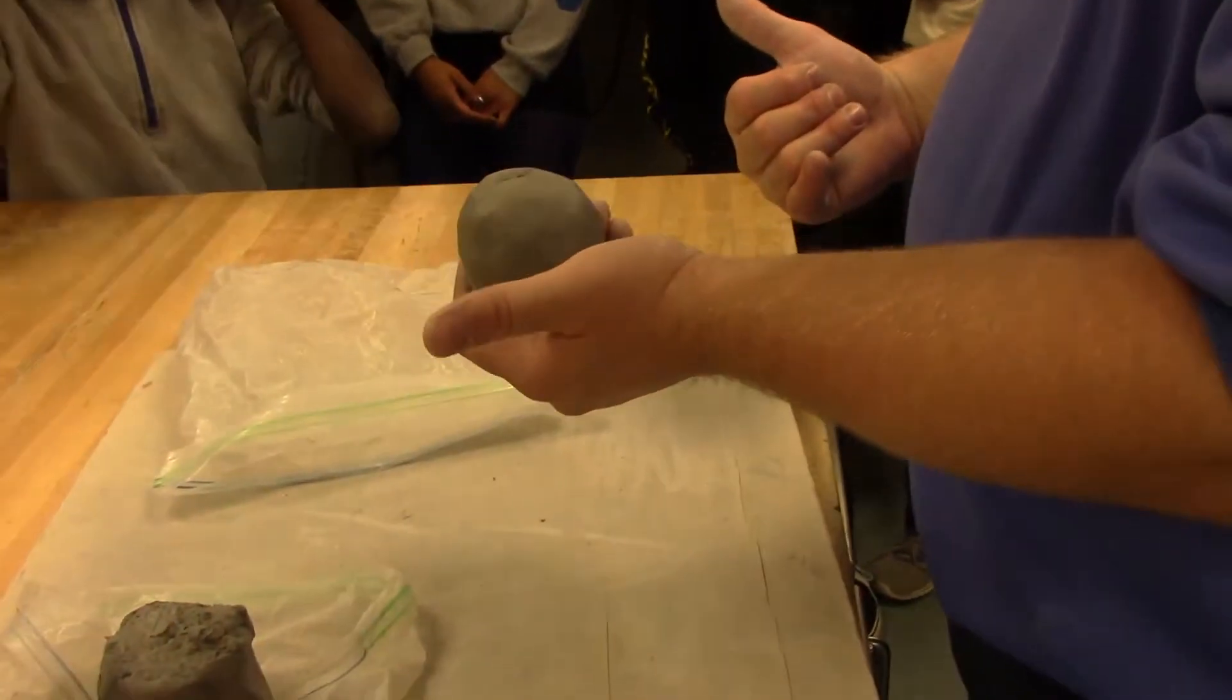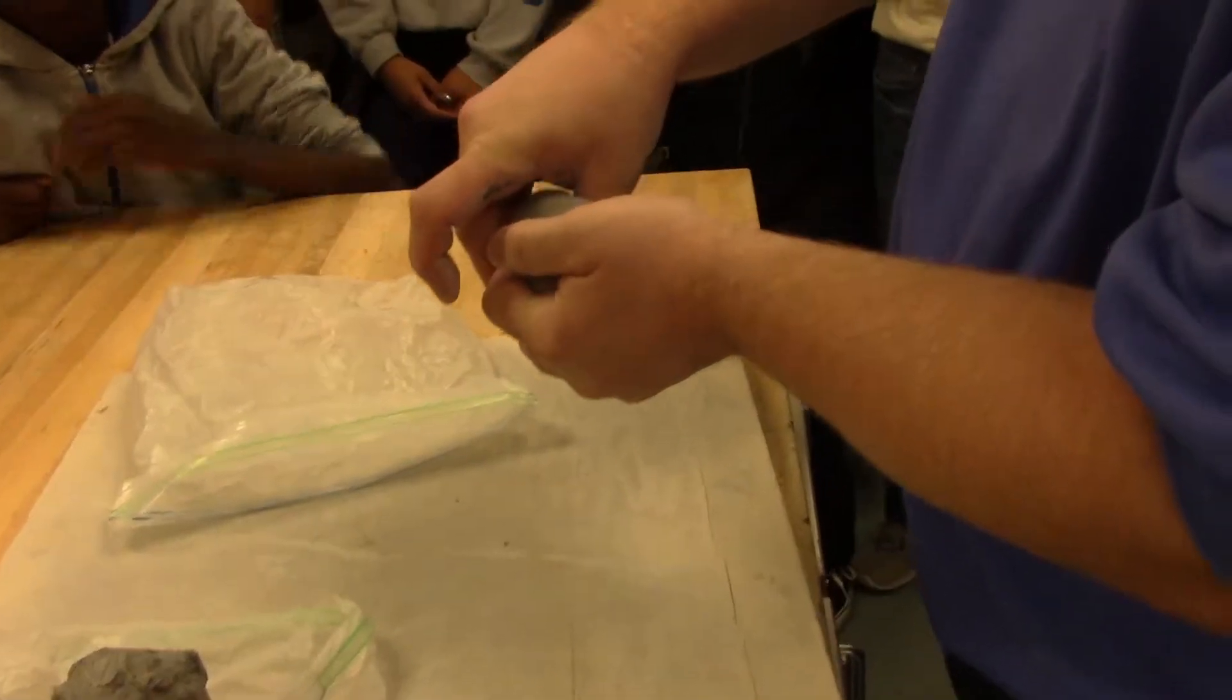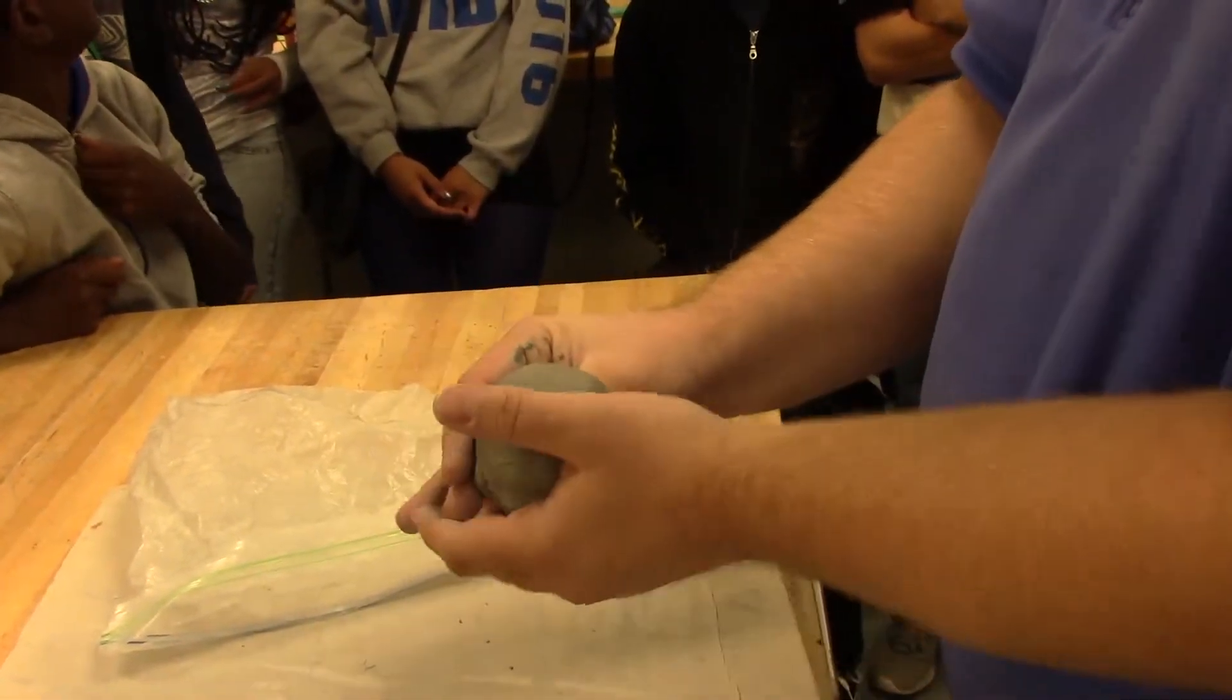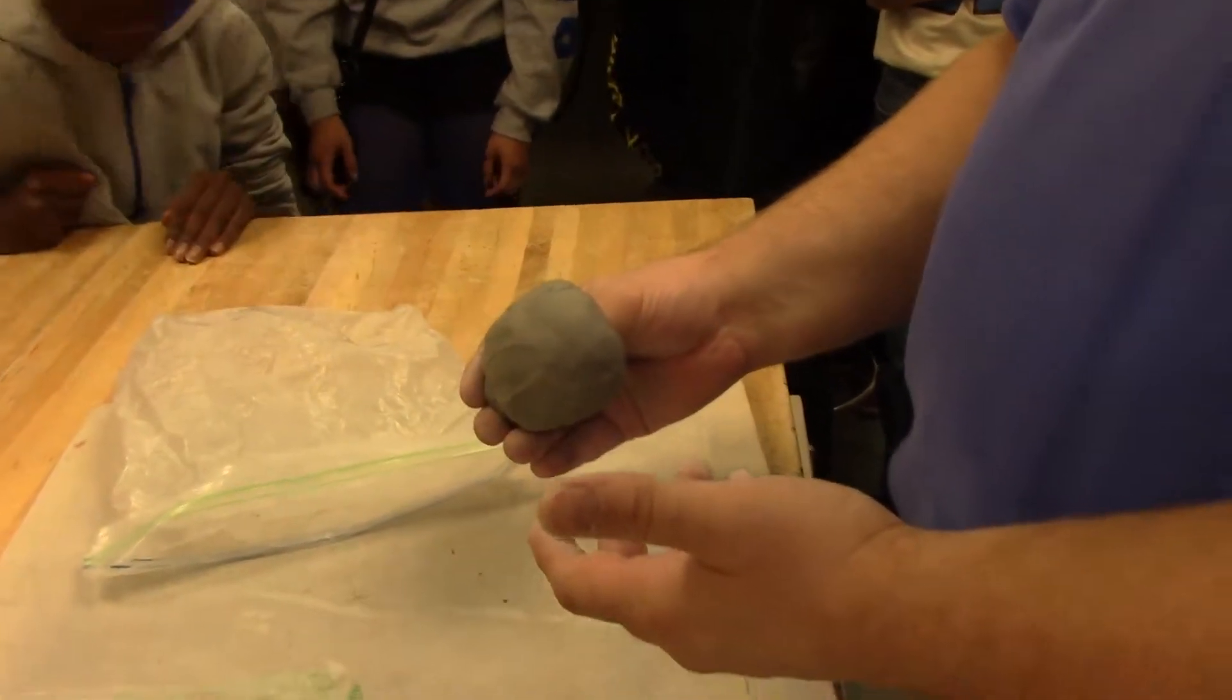So to start a pinch pot, you get your lump and you take your thumb and you push it all the way in down to about the bottom. And then amazingly to make a pinch pot, you start pinching it.